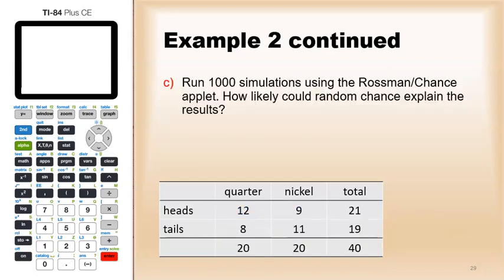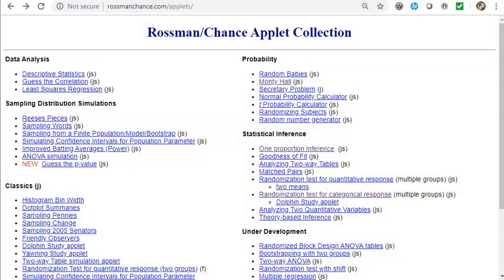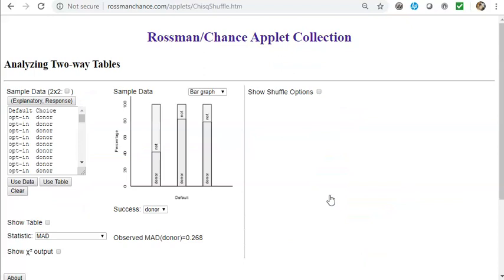Now, let's have the computer do this for us. Instead, we'll have the Rossman Chance Applet do it a thousand times. It'll take about a second once we have it set up. I'll choose Randomization Technical Response. You'll see the link to this right away on the homework and the lesson.